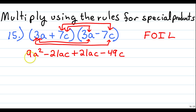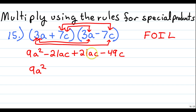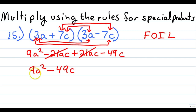Now we combine like terms. 9a squared has no like term, so it carries down as is. The middle two terms, negative 21ac and positive 21ac, have the same variables and opposite signs, so they cancel out and go away. We're left with carrying down minus 49c squared. So we end up with the binomial 9a squared minus 49c squared.